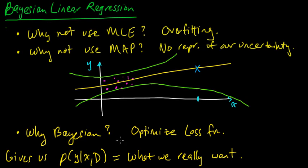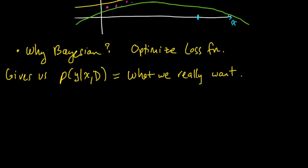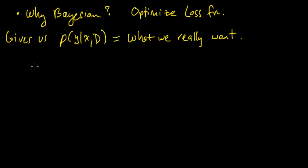So Bayesian gives us the predictive distribution, which is what we really want. So in the rest of this video, I'm going to set up the problem. I'm going to just remind you of the linear regression problem. And then we'll put a prior on our W parameter. And then I'm going to point you to some multivariate Gaussian videos because the multivariate Gaussian is an essential tool in Bayesian linear regression.